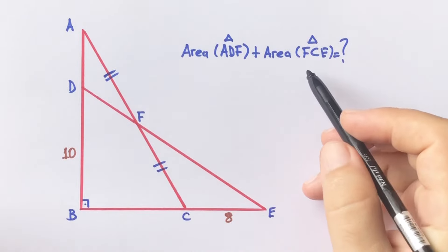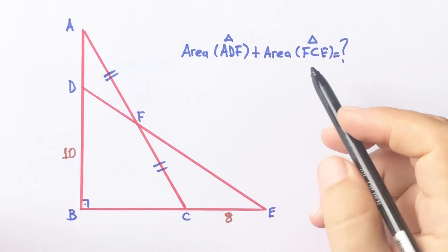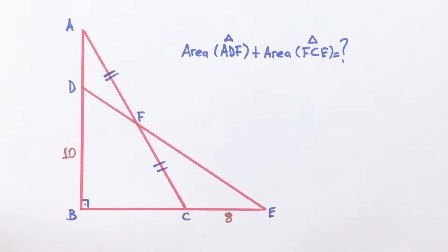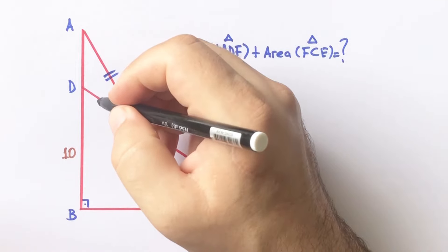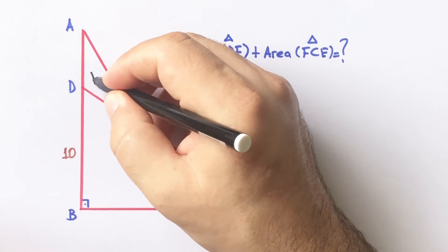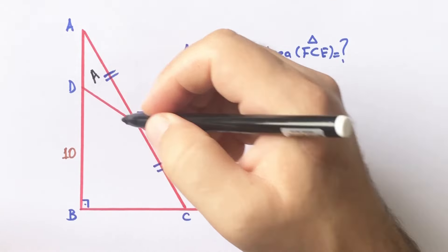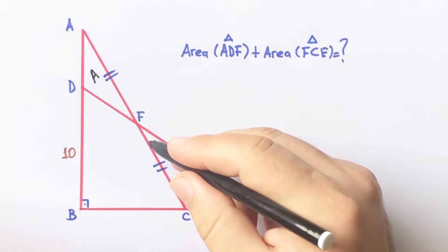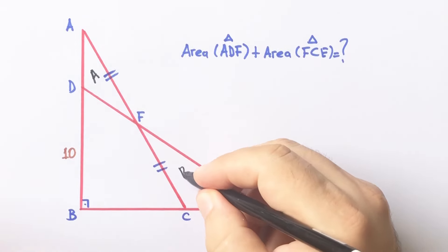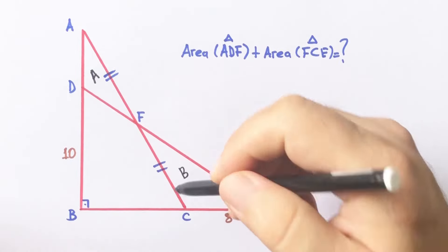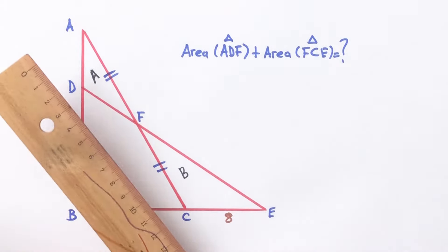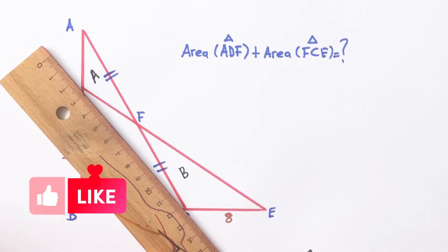Okay, I'm going to call this triangle area uppercase A, and this triangle area let's call uppercase B. And then if you connect D and C point like this.